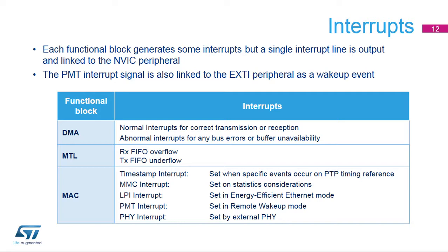The DMA part generates normal interrupts when a packet is received or transmitted, and also raises interrupts for bus errors or buffer unavailability. The MTL block generates interrupts when overflow is detected on the receive path or underflow on the transmit path. The MAC block generates interrupts linked to PTP protocol settings, MMC counters, energy-efficient Ethernet, and remote wake-up low-power modes. It also transfers interrupts coming from the external PHY.